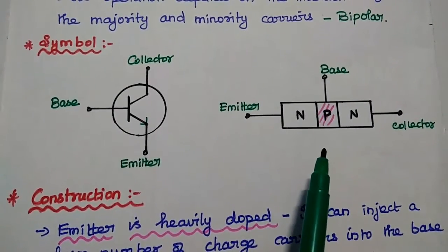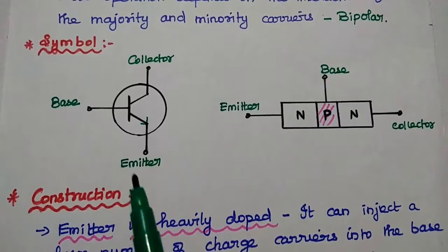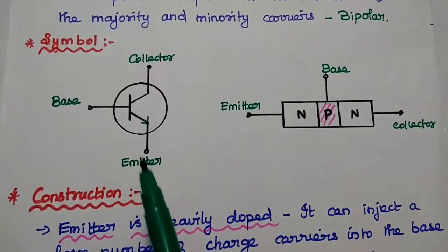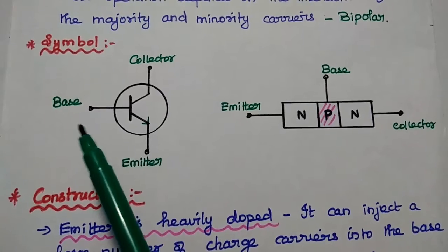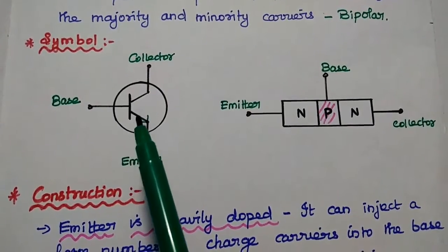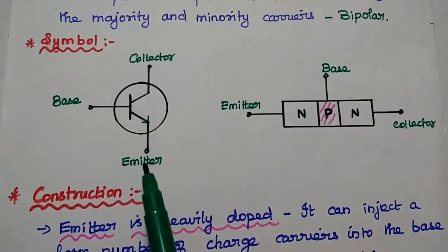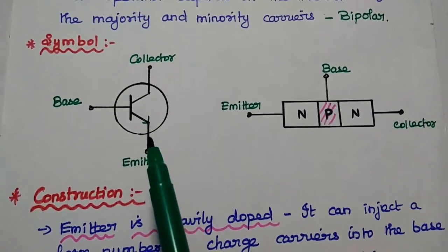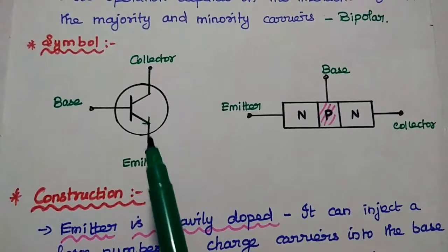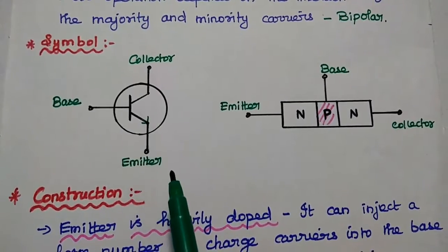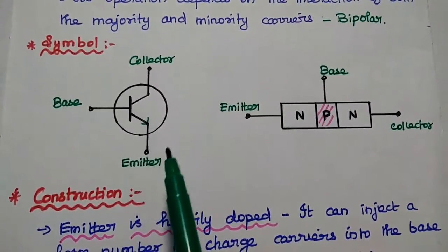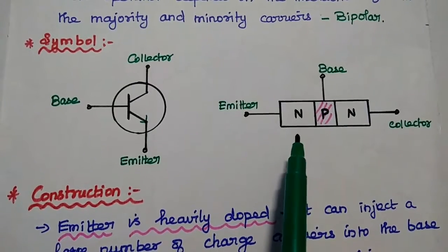NPN and PNP. Here we can consider NPN transistor. In this one, this is the emitter, base, and collector. The arrow on this emitter terminal represents the direction of current flow when this base-emitter junction is forward biased. This arrow represents the current direction.